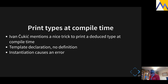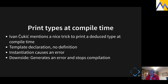But often our code doesn't actually compile, so we need to find out types at compile time. Ivan Cukic, in his functional programming book, mentions a trick to print the type at compile time. How he does it is he basically generates an error — he has a template declaration with no definition and tries to instantiate it, causing an error. This stops compilation but that's okay because you're only putting this in temporarily to find out what you've got.